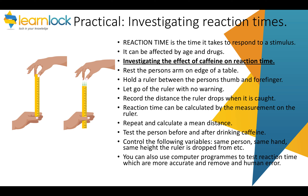You'll also need to know how to investigate reaction times — how long it takes someone to respond to a stimulus. An experiment you would need to know is the effect of caffeine on reaction time. Because caffeine is a stimulant, it is thought to speed up reaction rates. You get a person to put their arm on the edge of a table, hold a ruler between their thumb and forefinger, then let go of the ruler with no warning and record the distance at which they catch it. You repeat this a number of times to get an average, testing before and after drinking caffeine. A more accurate way to test reaction time would be to use a computer program, which eliminates human error and is more accurate.